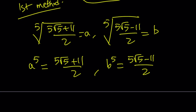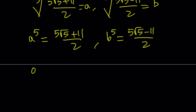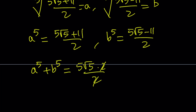Why is this nice? Because if you add these two equations together, 11 is going to cancel out. So let's go ahead and add them: a⁵ + b⁵. The 11 cancels out and you're going to have 5√5 twice divided by 2, so the answer is going to be 5√5.